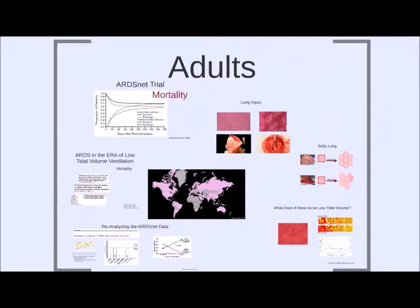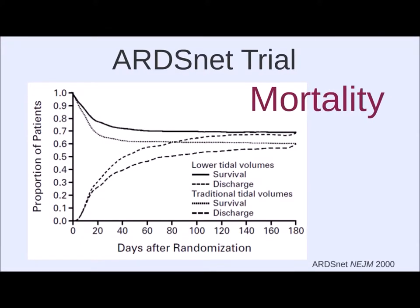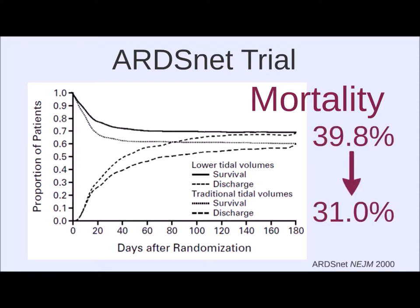Why do we think this study was so important? Look at these mortality curves: survival in the low tidal volume group (dark black line) is markedly improved versus the traditional tidal volume group (dotted line). Mortality went from about 40% down to 31% — a 9% decrease — simply by dialing back the tidal volume. Critically, they compared 6 cc/kg versus 12 cc/kg. Prior studies comparing 6 vs. 8, 6 vs. 10, or 8 vs. 12 cc/kg showed no significant difference.